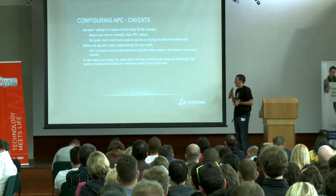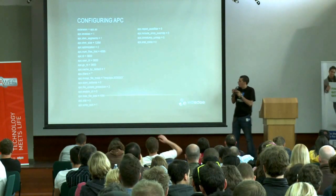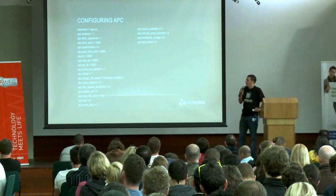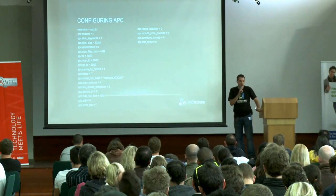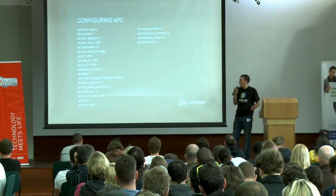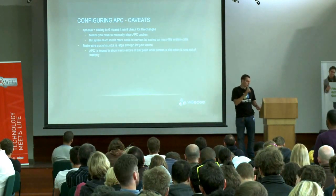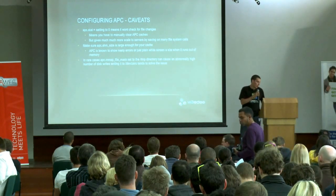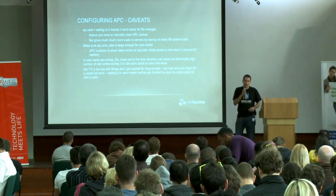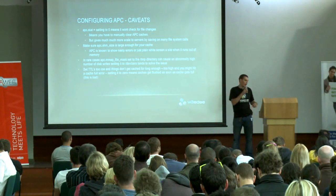In rare cases, the apc.mmap_file_mask set to /tmp/apc_XXXXX can cause filesystem issues where it writes to disk 100% of the time. If that happens, change it to /dev/zero. Also be careful with TTLs: set them too low and nothing gets cached long enough; set them too high and you hit the cache-full issue. If TTL is set to zero, the cache gets completely flushed as soon as it fills up — which is bad.